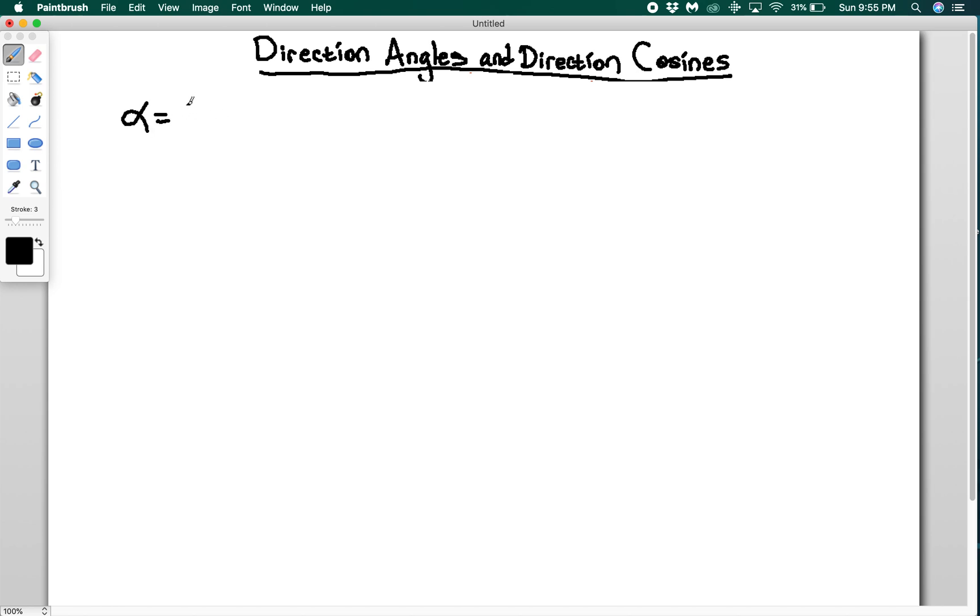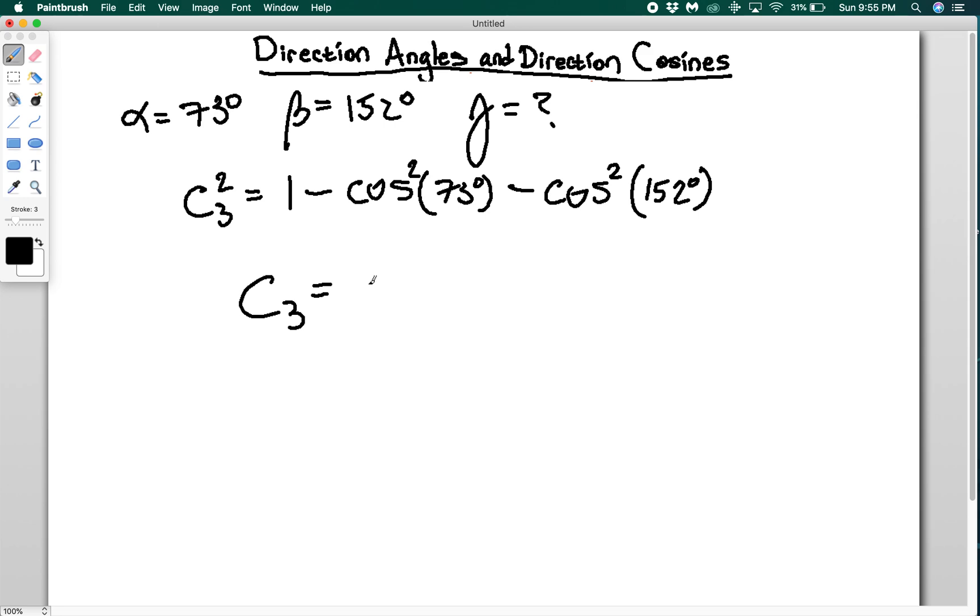Let's say that I give you alpha equals 73 degrees, beta equals 152 degrees, and I want you to find gamma for some vector v. So I can use this and say, well, I know that c3 squared has to be equal to 1 minus the cosine of 73 degrees squared minus the cosine squared of 152 degrees.